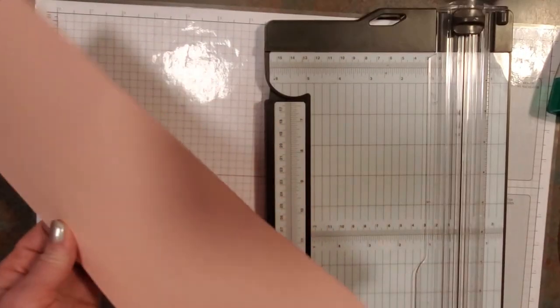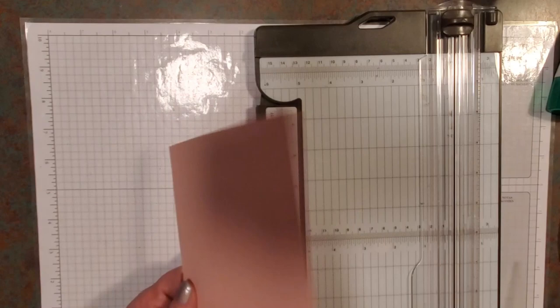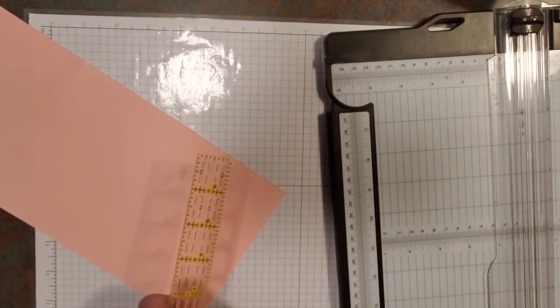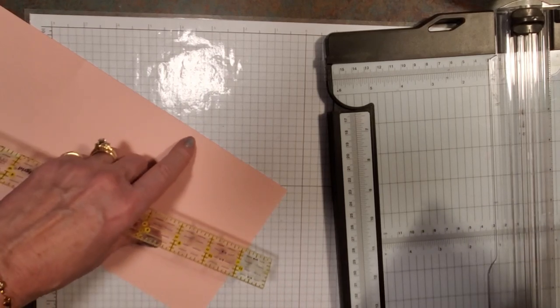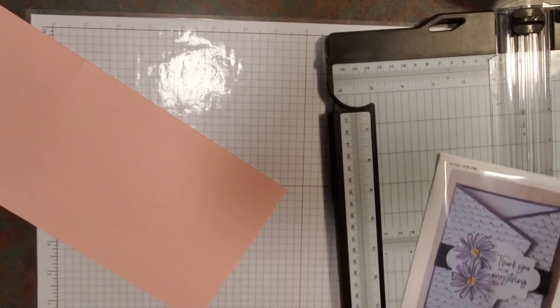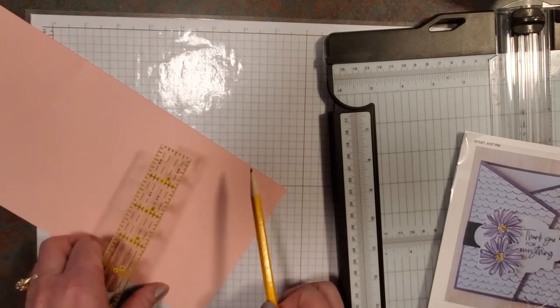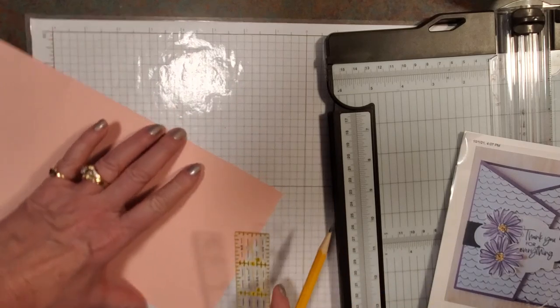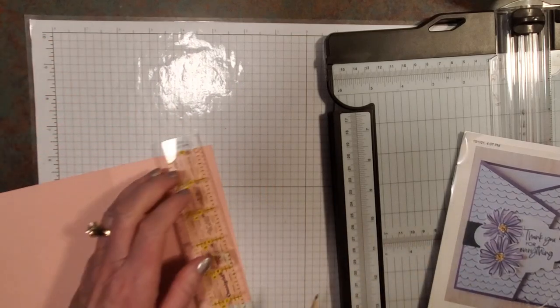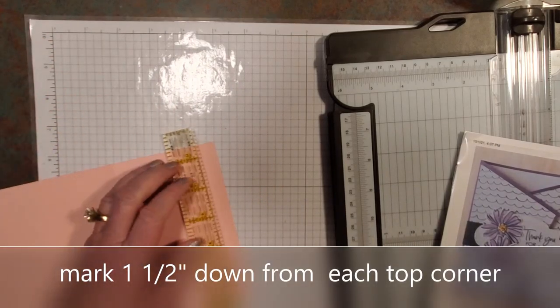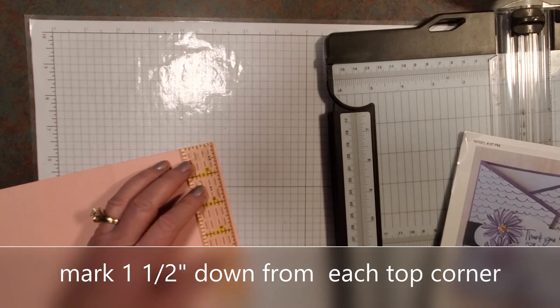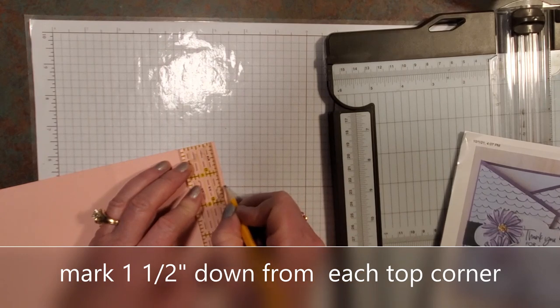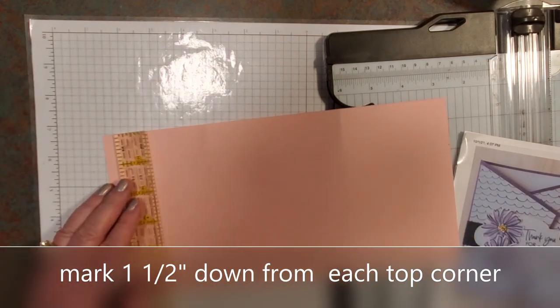So that's the first part, getting those score lines. Now, you don't really need to score it right now, but you do want to be sure you can see where you scored it, because you're going to use that to cut your angle. First, you have to measure your angle. So we're going to go from the channel, because that's where the score line is. From that channel, you're going to mark 1 1/2 down.